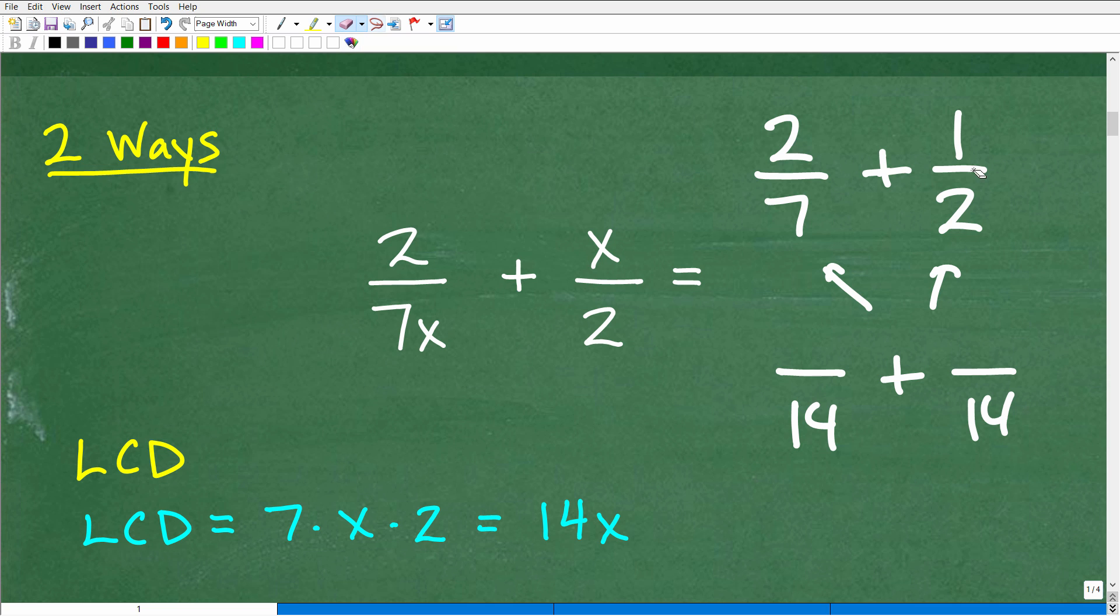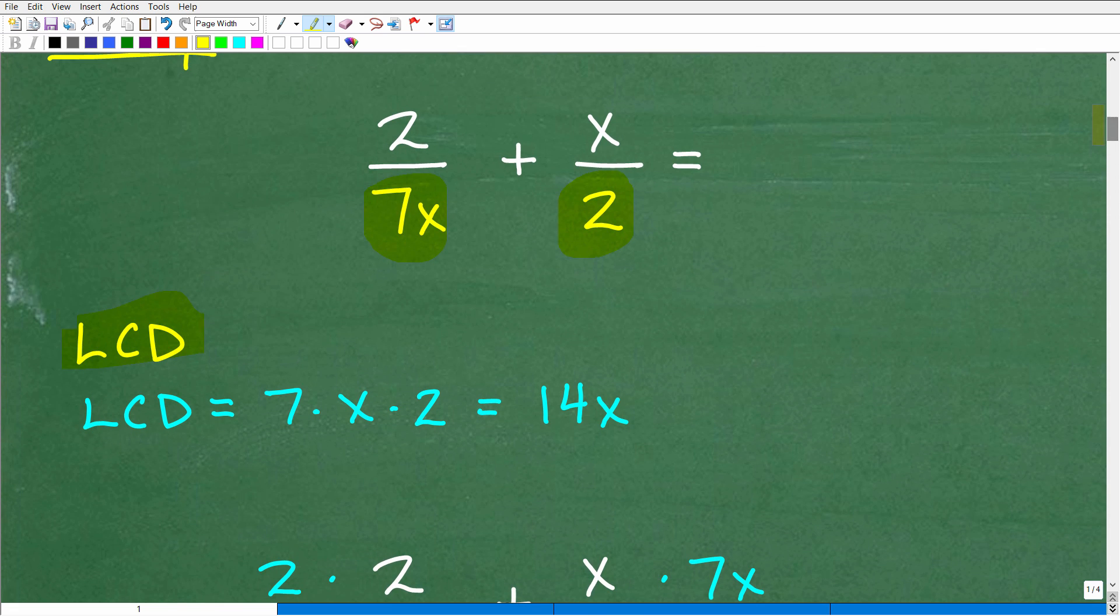Okay. So here, when we're dealing with fractions that have variables, you still need to be thinking in terms of what you learned in arithmetic, i.e., what is the LCD here? So we have seven X and two. We can't add these fractions because these denominators are not the same. So we have to find the lowest common denominator.